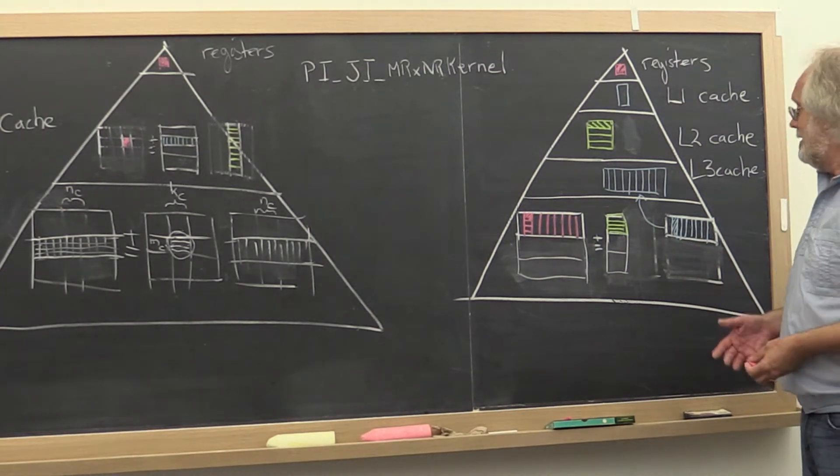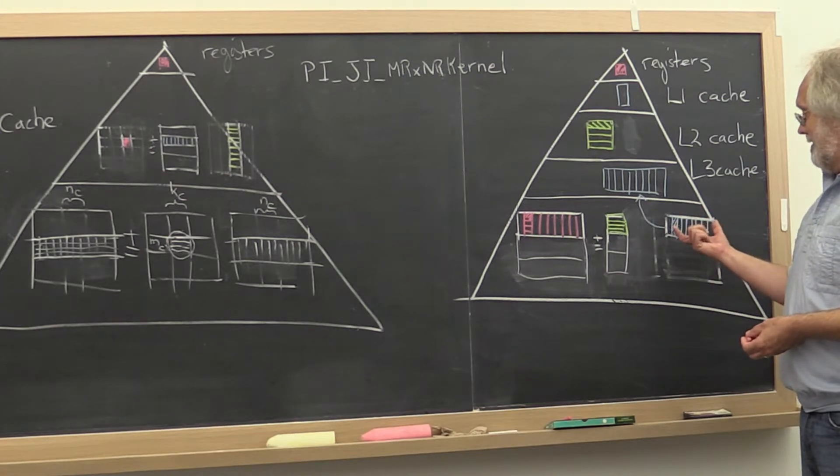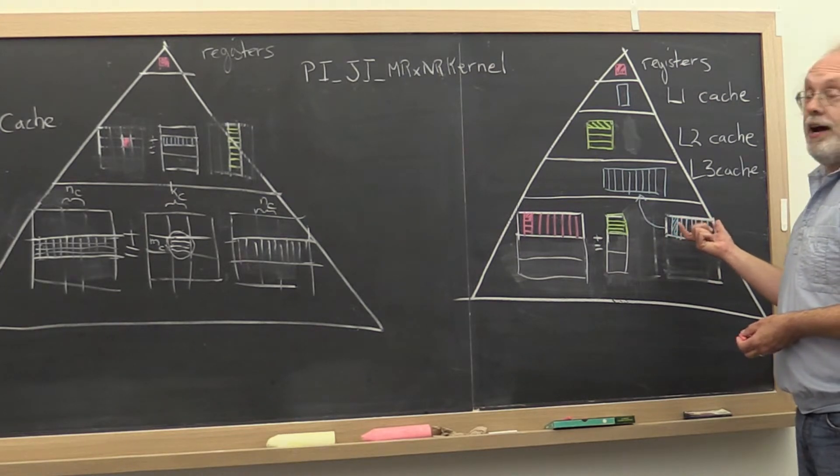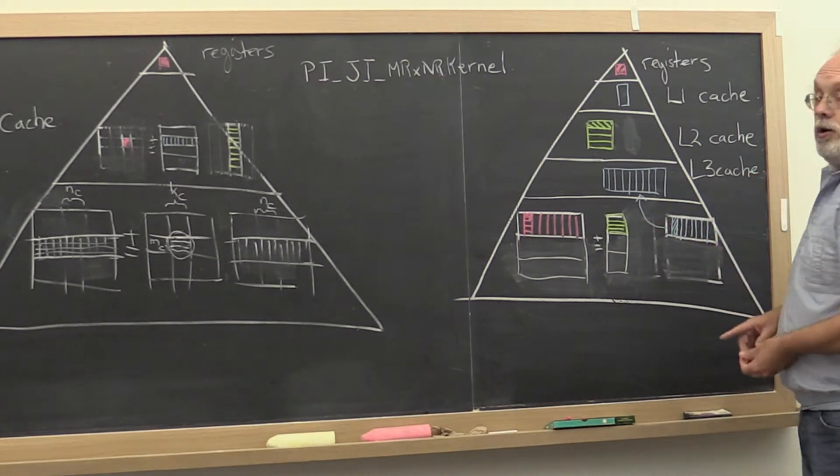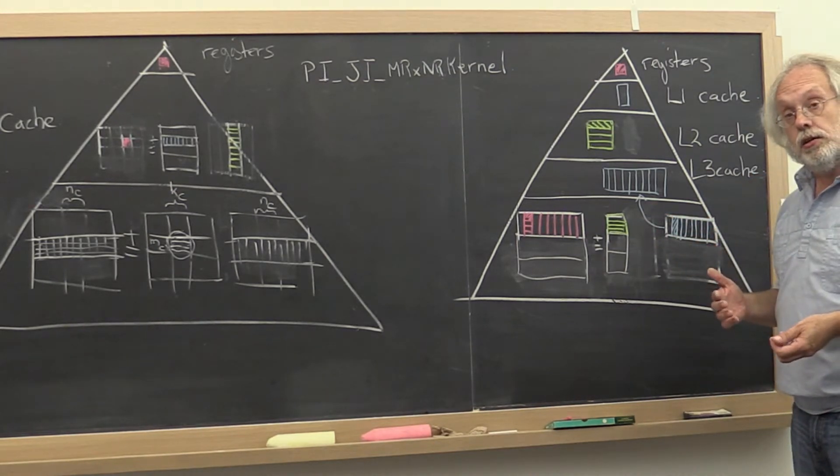So to ensure that this row panel of B doesn't have too many columns, what we need is one more loop.